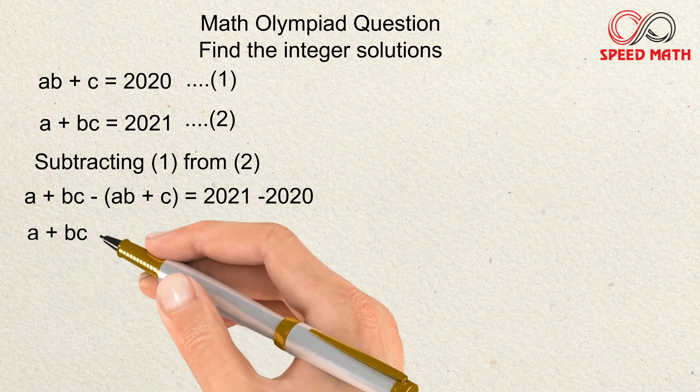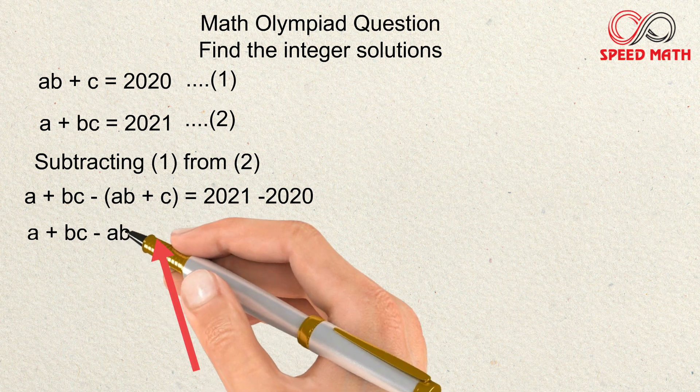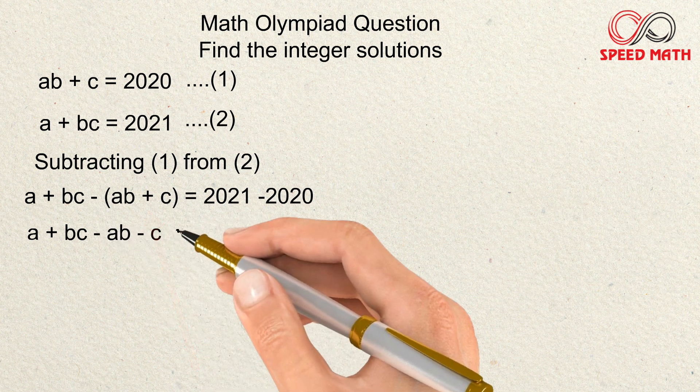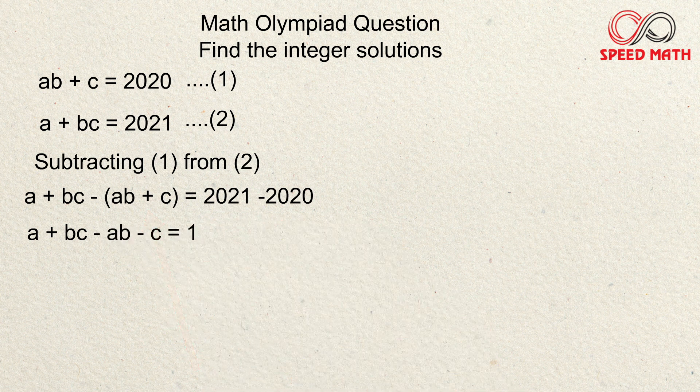Opening the bracket, a + bc remains as it is, and the signs inside change: so we get minus ab and minus c. So we have a + bc − ab − c, and 2021 − 2020 gives us 1.